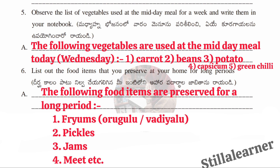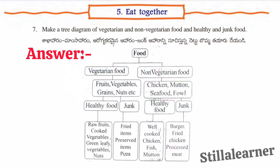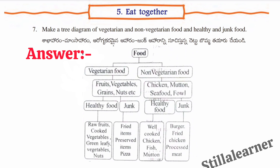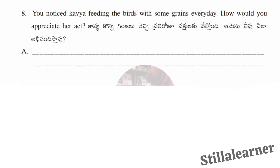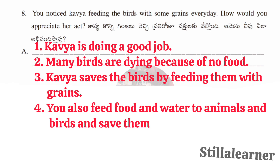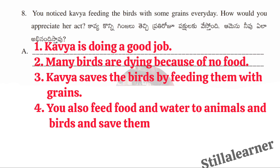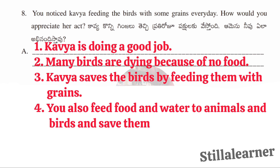Seventh question: make a tree diagram of vegetarian and non-vegetarian food, and healthy and junk food. Please pause the video and write it down without mistakes. Eighth question: you notice Kaveri feeding birds with grains every day — how would you appreciate her? Answer: Kaveri is doing a good job; many birds are dying because of no food; Kaveri saves birds by feeding them with grains; you can also feed food and water to animals and birds.